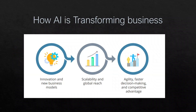AI is more than a buzzword — it's a transformative force reshaping industries and enhancing daily lives. AI transforms business in three fundamental ways: innovation and new business models, scalability and global reach, and agility with faster decision-making. For innovation, think about recommendation engines powering Netflix and Amazon — creating personalized experiences that lead to new subscription models and buying habits, predicting what customers like and showing them more of the same. AI also provides incredible scalability and global reach, handling tasks efficiently that used to require vast human teams.